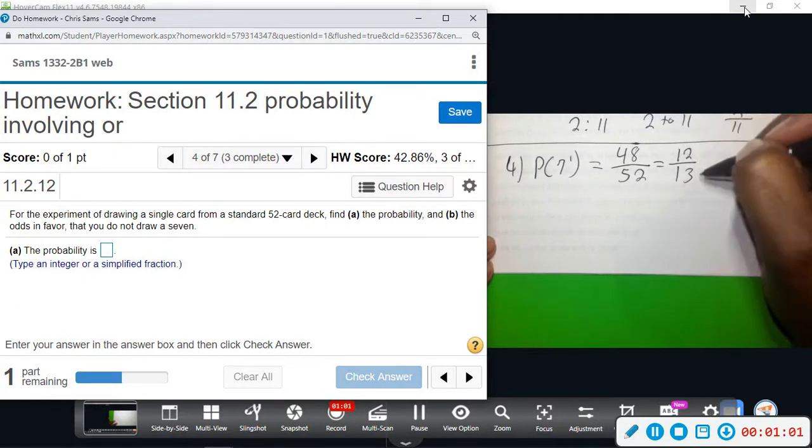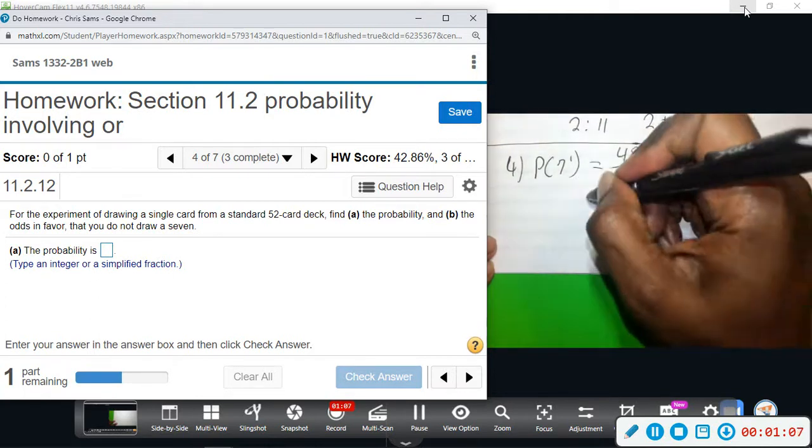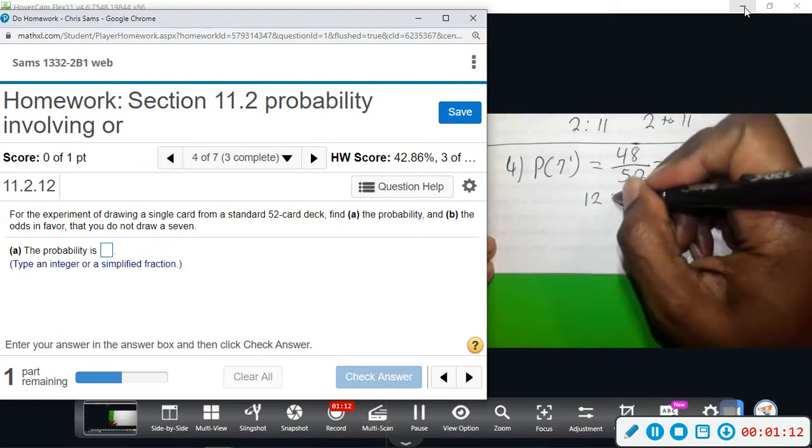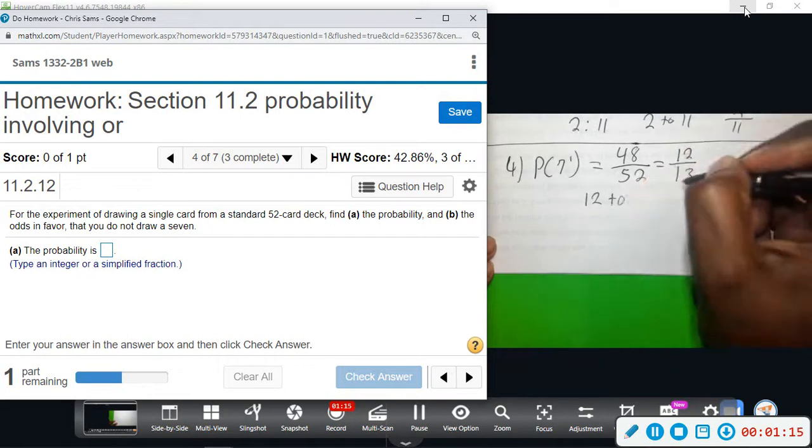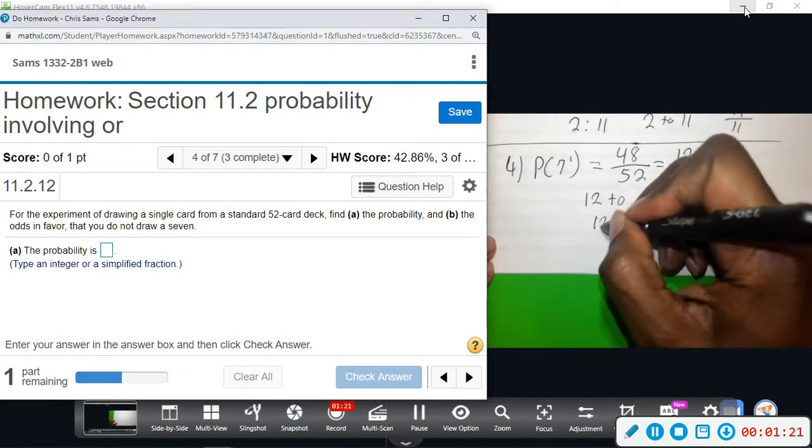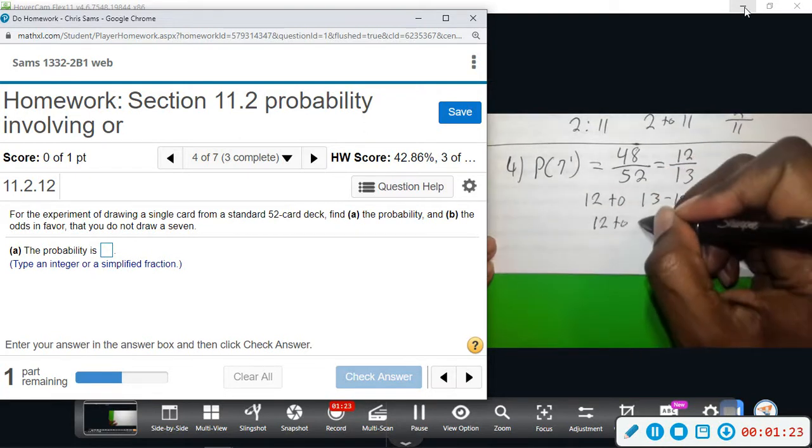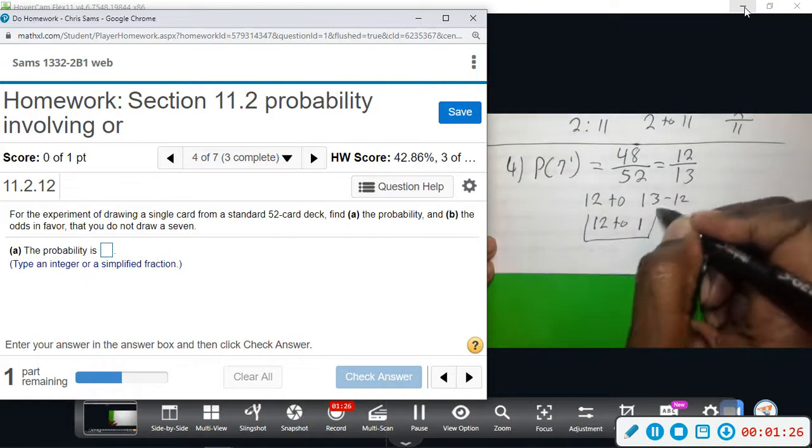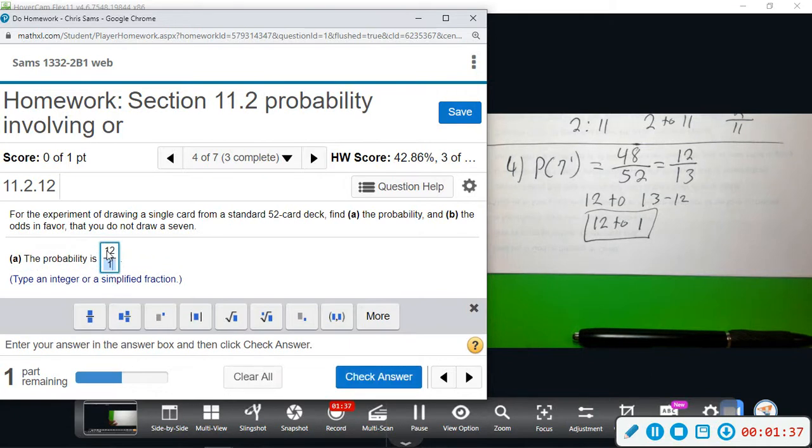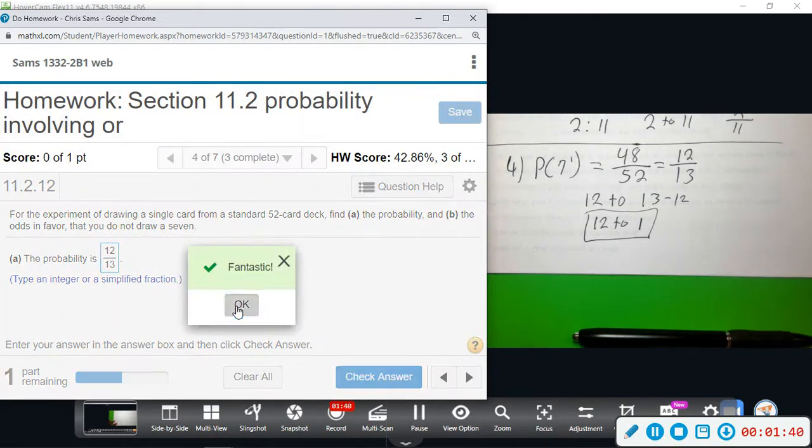So this is the probability that we do not get a seven. Odds - remember, subtract this from this - that will give us 13 take away 12, so that gives us 12 to 1. All right, so these two should add up to be your total whenever you do that.